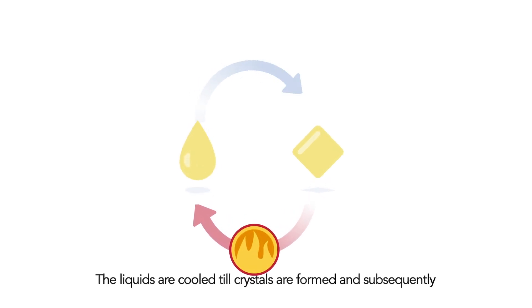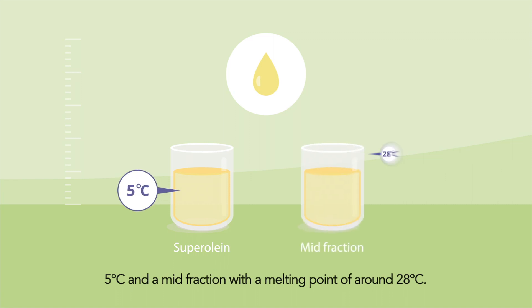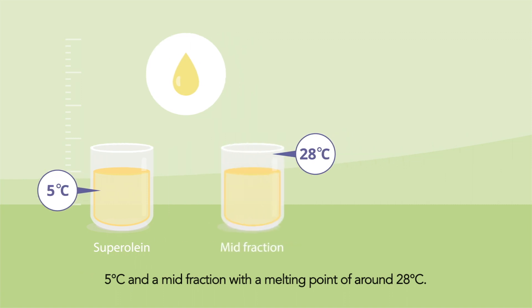The liquids are cooled till crystals are formed and subsequently separated by membrane filtration. The olein fraction is separated into superolein with a melting point of 5 degrees Celsius and a mid-fraction with a melting point of around 28 degrees Celsius.